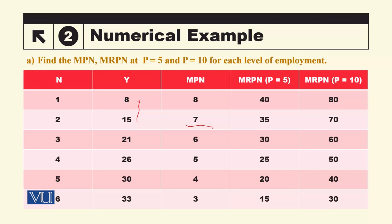You can see that the marginal product of labor values are: 8, 7, 6, 5, 4, 3. Two things are visible here: first, all values in the third column are positive; and second, the values are declining. We say marginal product of labor is positive, and it is diminishing — this is the economic theory being reflected through this example. In the fourth column, we multiply the third column by the price of output, assuming price is $5 per unit. So marginal product 8 × 5 = 40, 7 × 5 = 35, and so on.